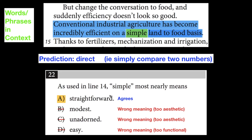Straightforward and direct are very similar words and strong candidates. Modest is another word for simple, but not in this context — it's too aesthetic, like 'simple modest clothing' or 'simple unadorned buildings.' And even 'easy' — like 'this Rubik's cube is simple' — is a valid everyday usage of the word.